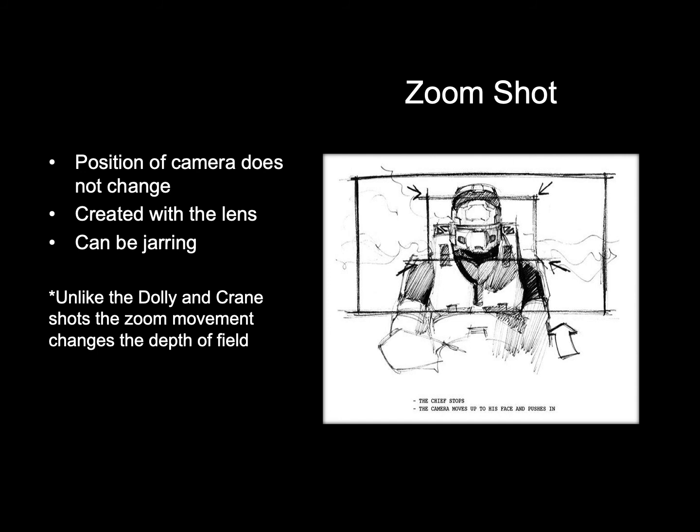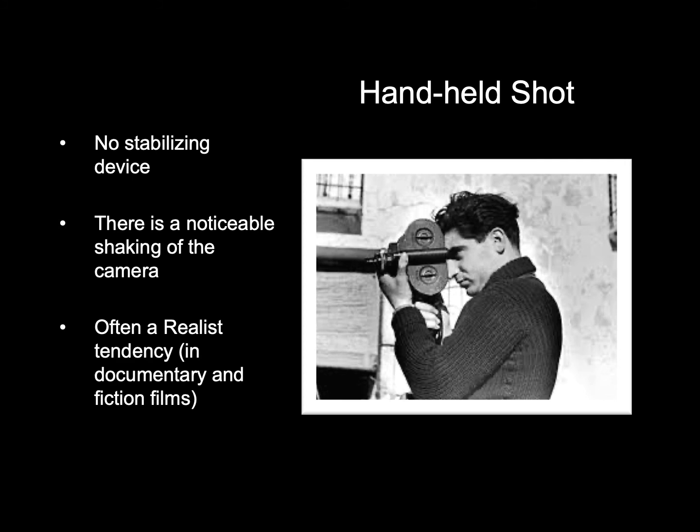Zoom shot: the position of the camera doesn't change — the zoom is created with the lens and it can be jarring. Unlike the dolly and crane shots, the zoom movement changes the depth of field. Handheld shot: no stabilizing device, so there's a noticeable shaking of the camera, often a realist tendency in documentary and fiction films.